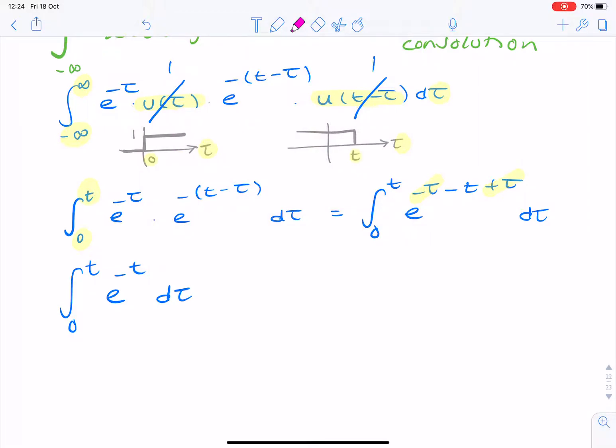Now, remember, we're actually integrating over tau. So, the variable t is actually a constant. So, we can actually take the e to the power minus t outside the integral.